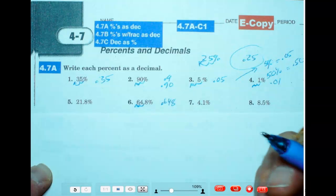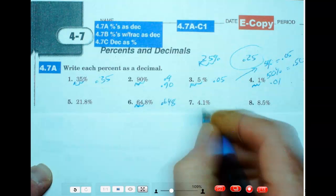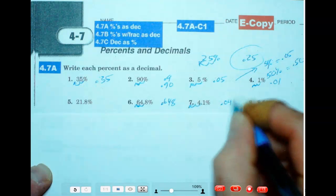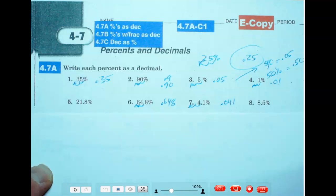But if it has a decimal, start where the decimal's at, like on this one here. Then put in the placeholder, 0.041. It would be the decimal.